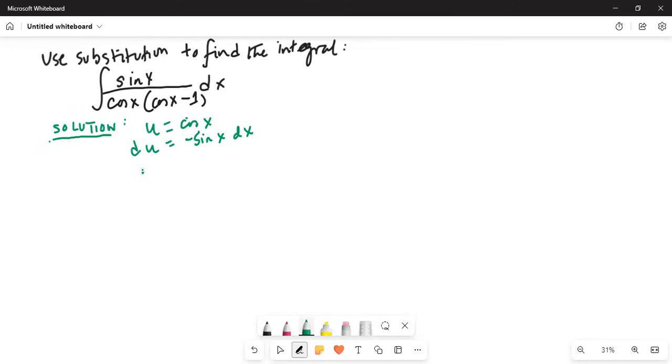Also we note 1 over u times u minus 1 can be broken up into two partial fractions: A over u plus B over u minus 1, which can be written as 1 is equal to A times u minus 1 plus B u.